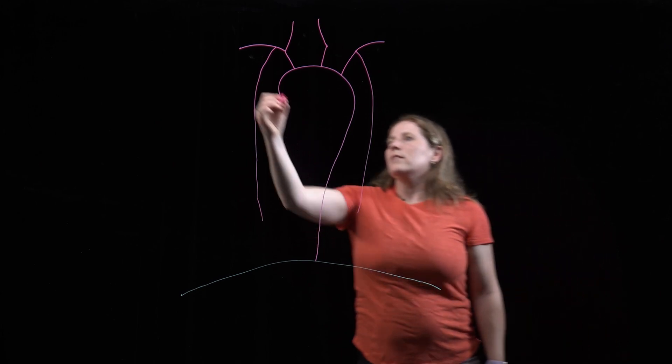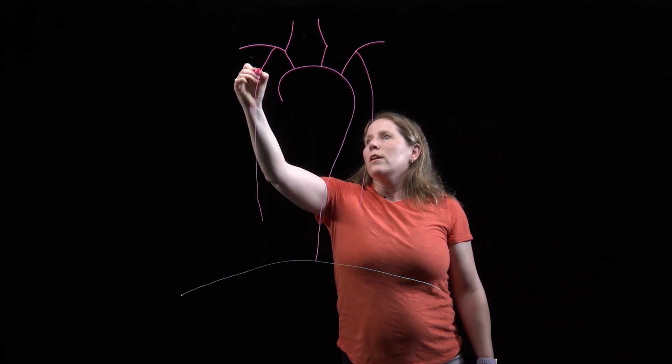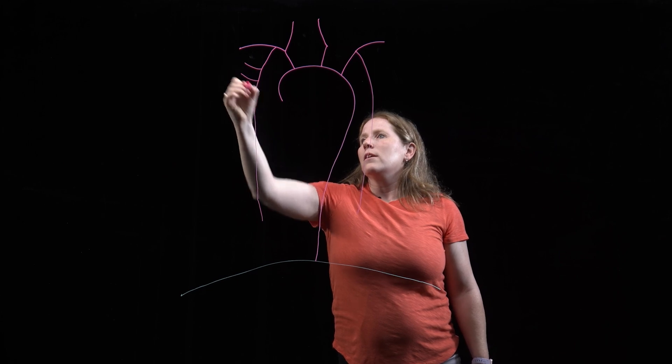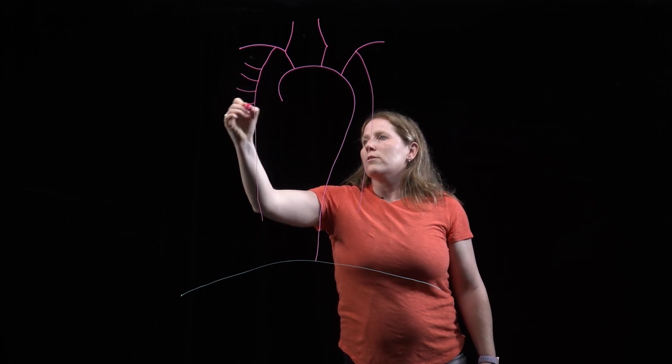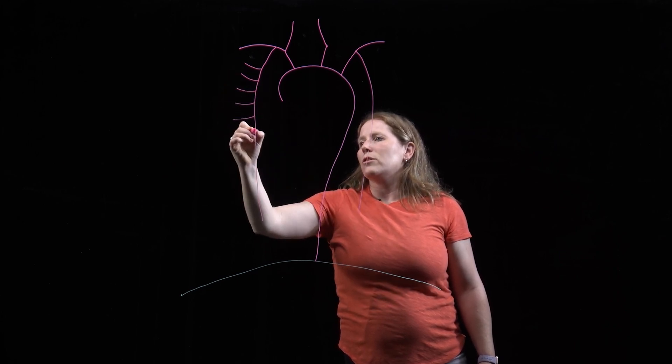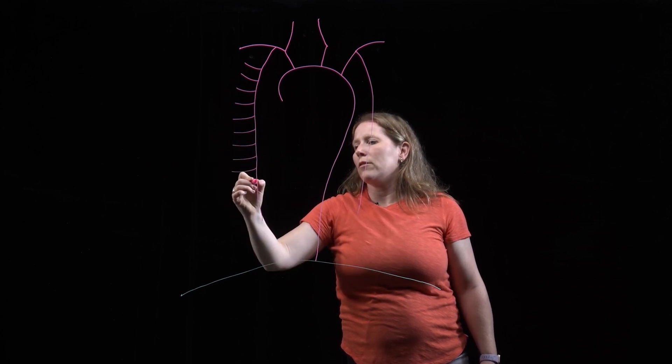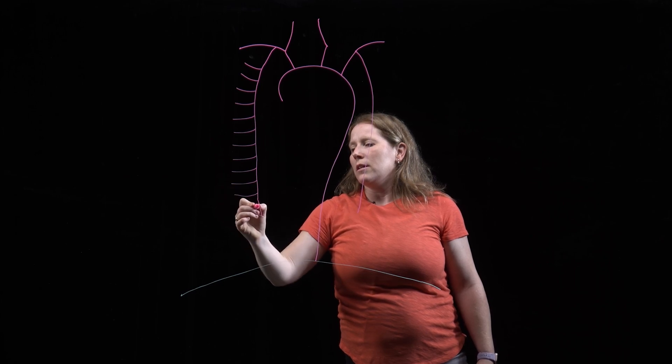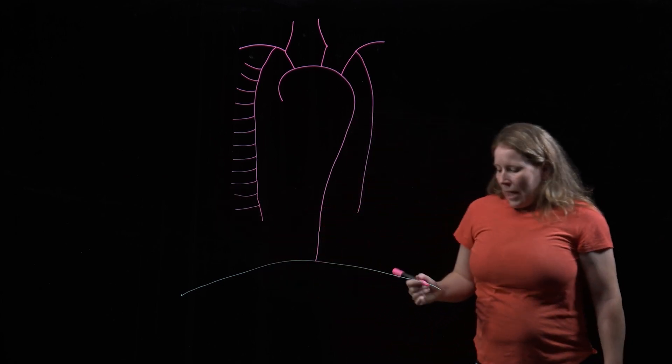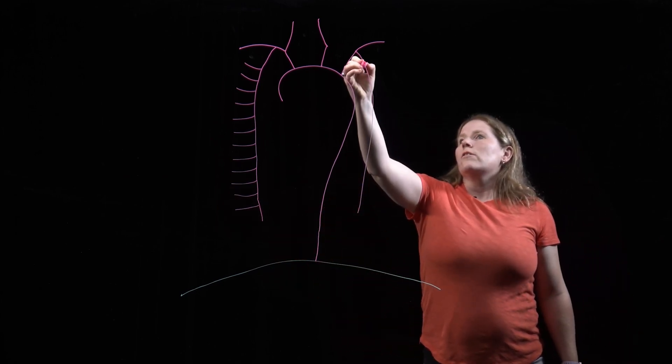They're also going to give rise to arteries that turn and run backwards within the intercostal spaces. I'm just going to draw the origins of them, but they would run further and around the ribs. These are the anterior intercostal arteries.